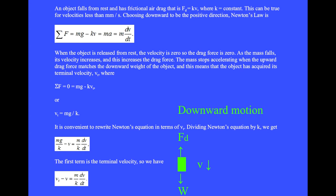v sub t, where the sum of the forces is zero equals mg minus kvt, or the terminal velocity is mg over k.